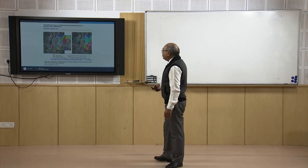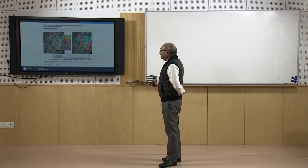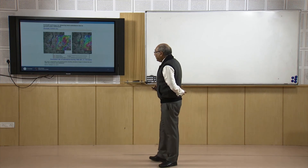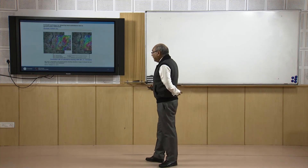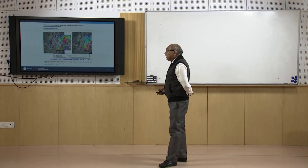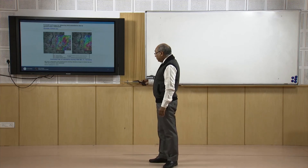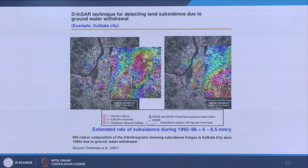Similarly, SAR interferometry techniques have been used for land subsidence due to groundwater extraction. In Kolkata city, over approximately 6 years from 1992 to 1998, about 5 to 6 millimeters per year of subsidence was observed. So the causes of ground deformation measured by InSAR can include earthquake, landslide, groundwater extraction, and mining.